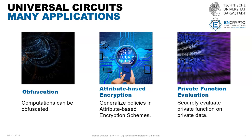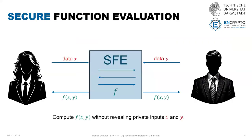The application I want to focus on in this talk is private function evaluation. You probably know secure function evaluation, also known as multi-party computation or secure two-party computation. We have two parties, Alice and Bob, and they want to compute a function on their private inputs. The function f is known to both parties, and in the end they only want to learn f(x, y) but don't want to reveal any other information about their inputs or intermediate data.